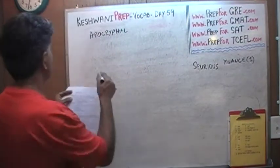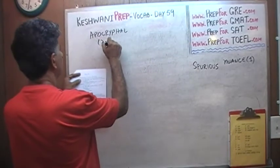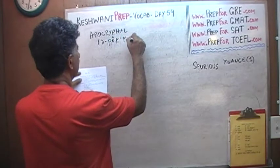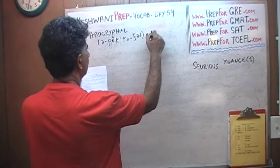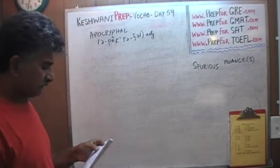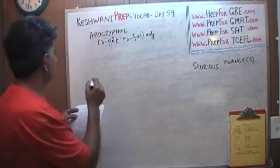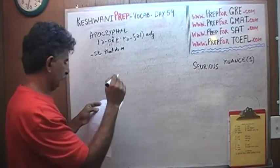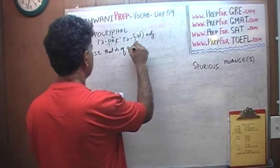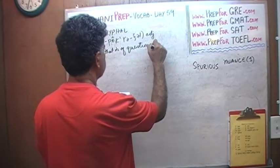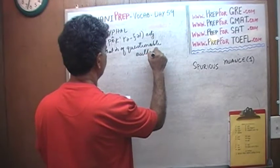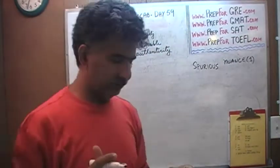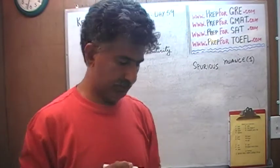Let's first look at apocryphal — A-poc-ro-phal. Something is described as apocryphal if it is of questionable authenticity. If you doubt whether or not something is true, that something is described as apocryphal.